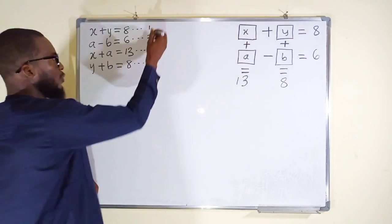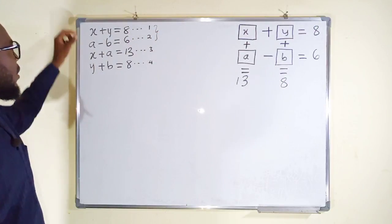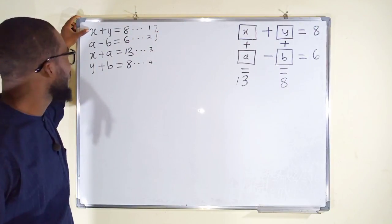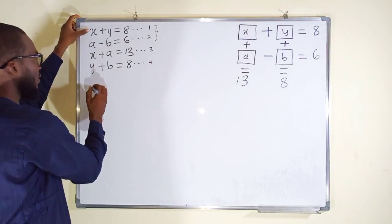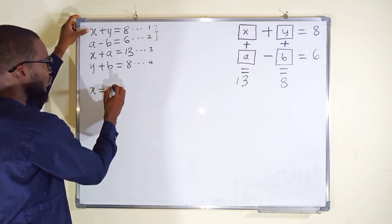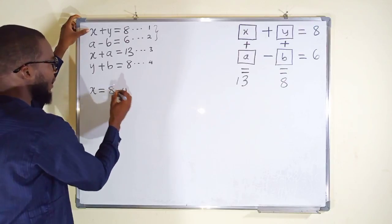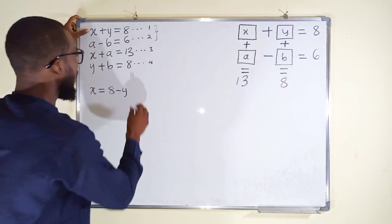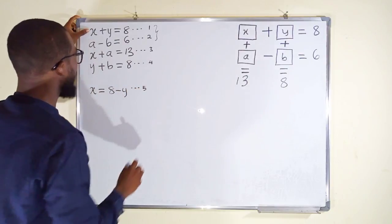Let us first use these first two equations. In equation 1, we want to make x the subject. From equation 1, x is equal to 8 minus y when y crosses the equality sign. I'll call this equation 5.